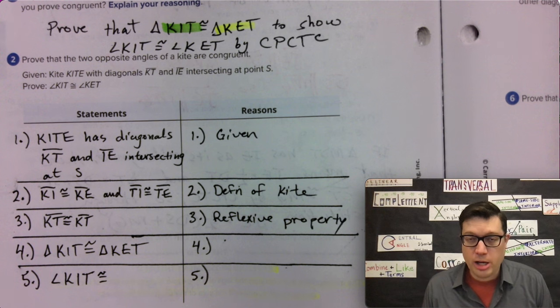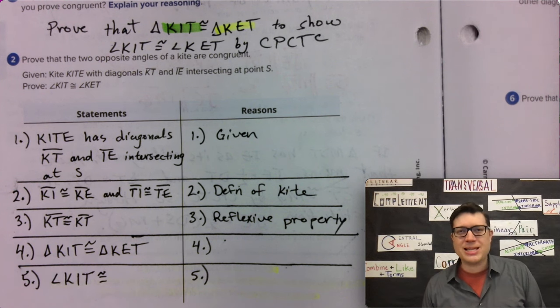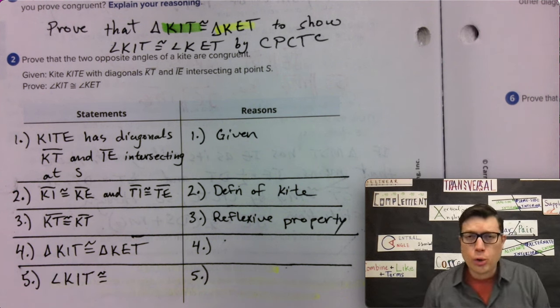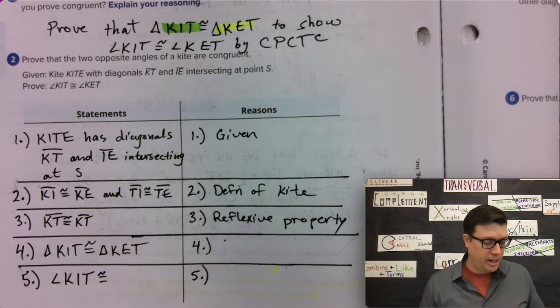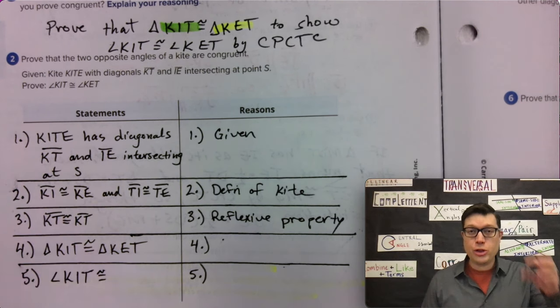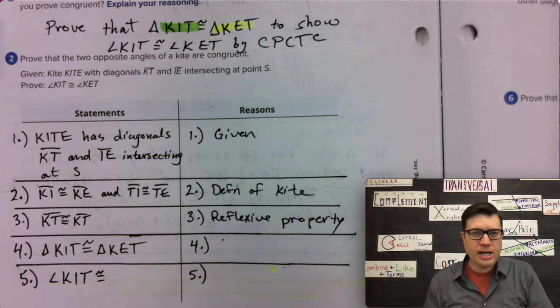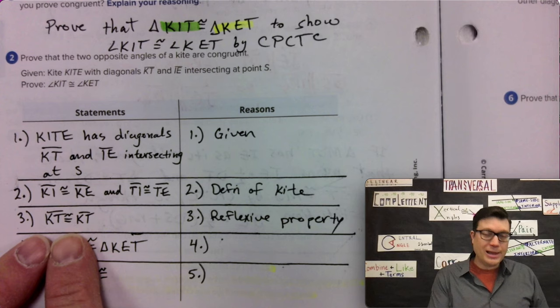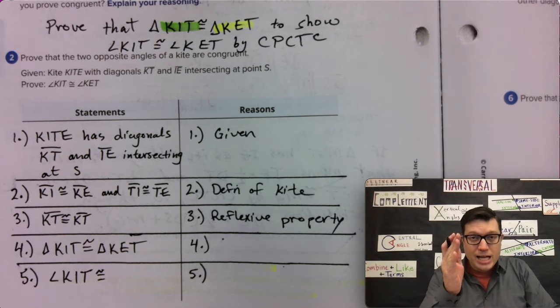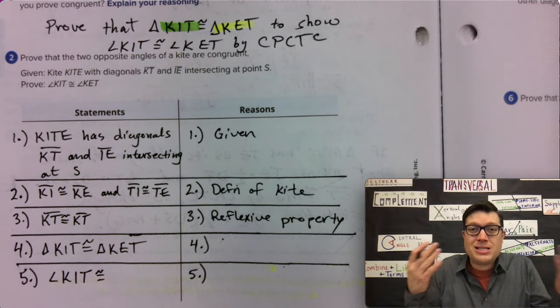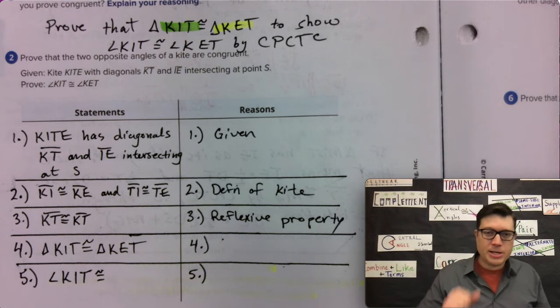The line, the orange line on my diagram, go back a couple of seconds. KT. KT is congruent to itself. That's the reflexive property. And we wanted to establish this, that those two triangles, when they are brought together, they form the actual shape of the kite. So therefore the line that is along that edge where those two triangles come together, it's the same for both triangles, reflexive property.